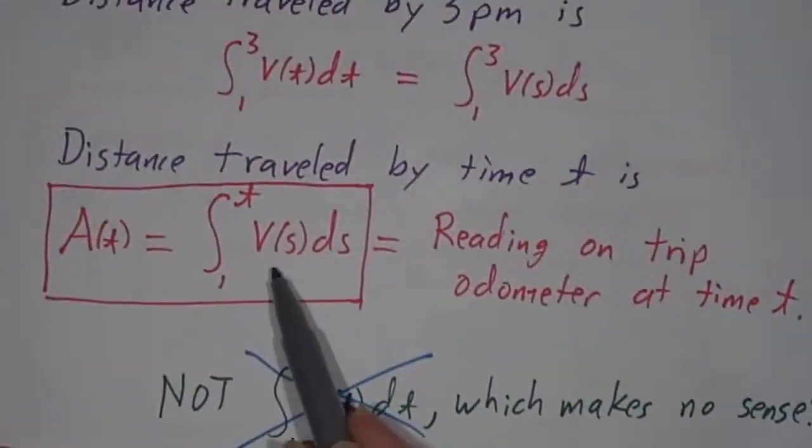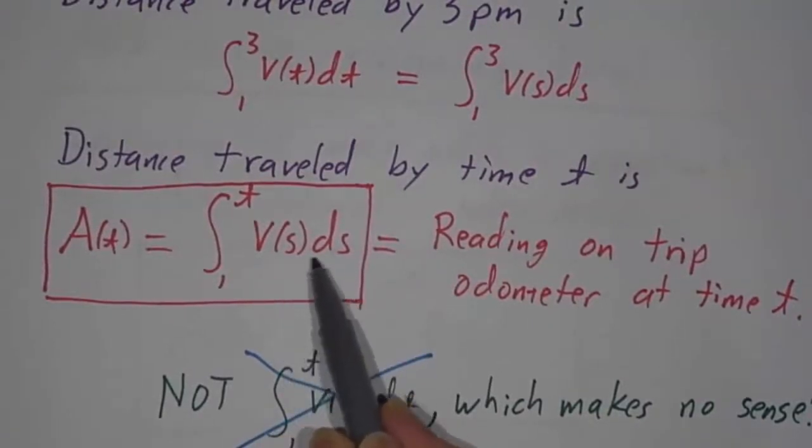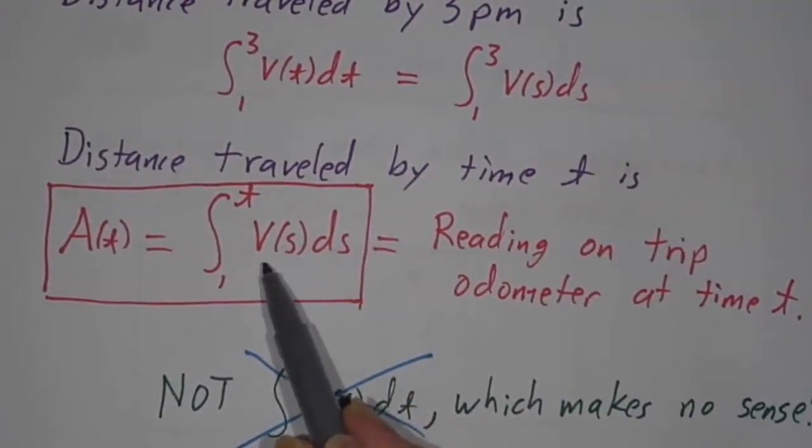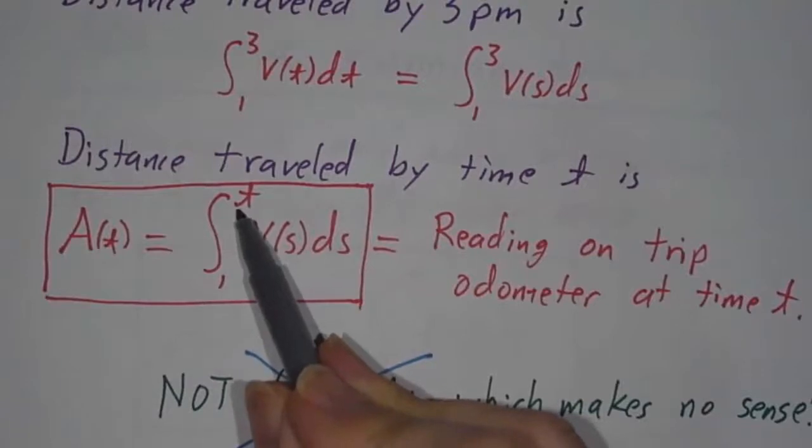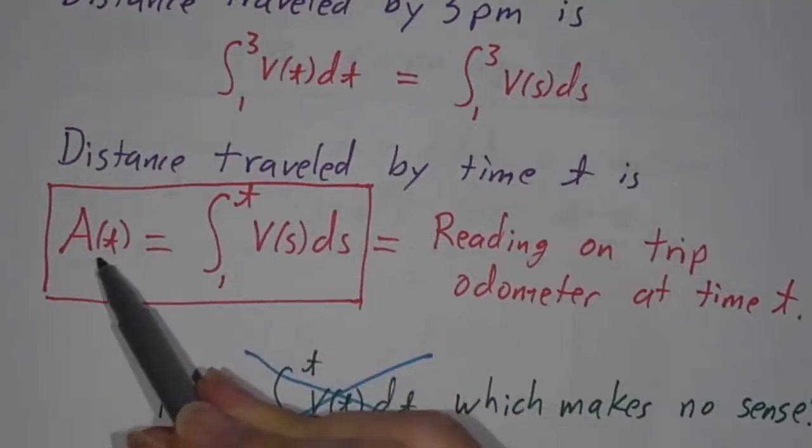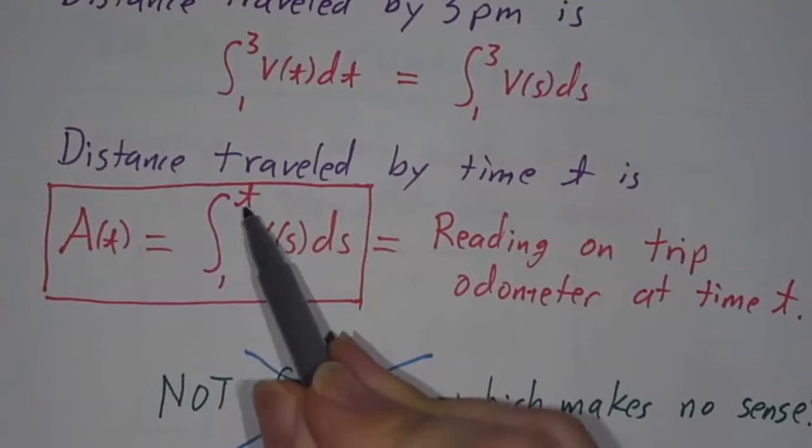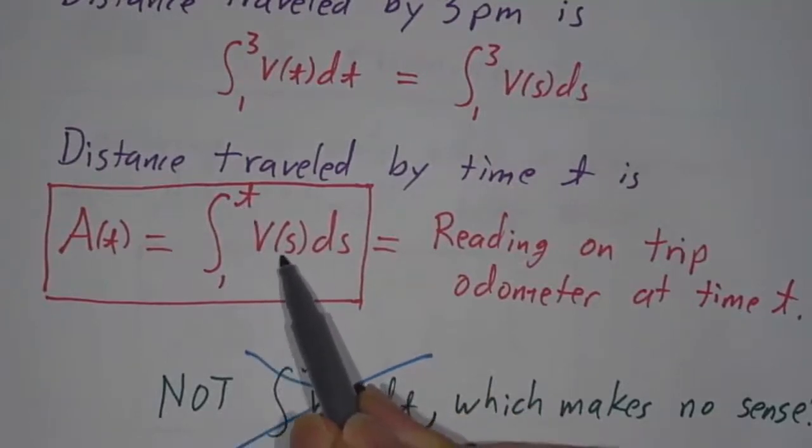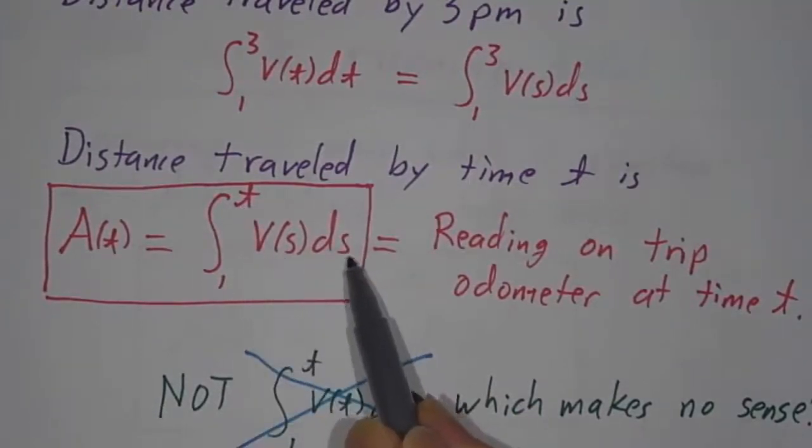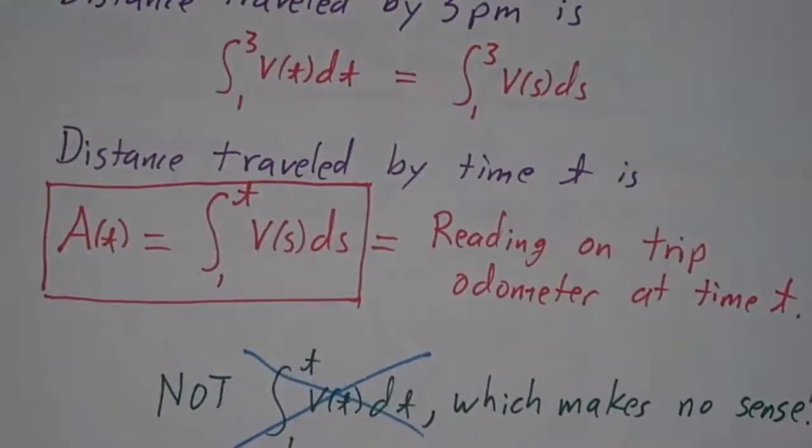So the point is when we do this integral, we can call the variable that we're integrating anything we like except t. t is the input for this function. For the integral, it's a particular number, while s is something that takes on a whole bunch of values starting at 1 and running all the way up to t.